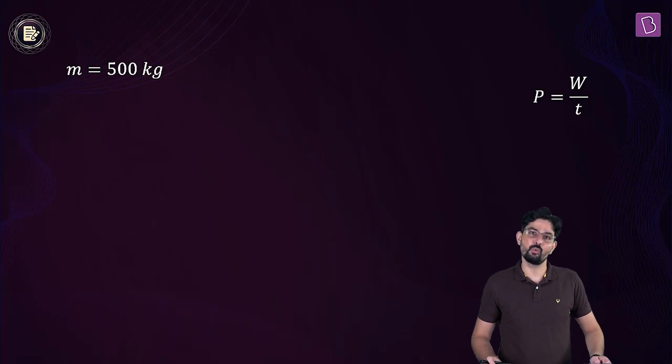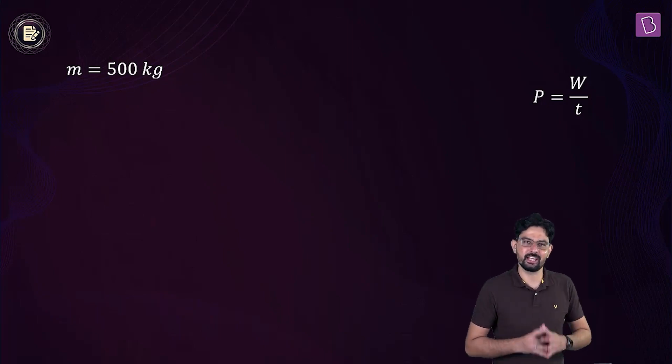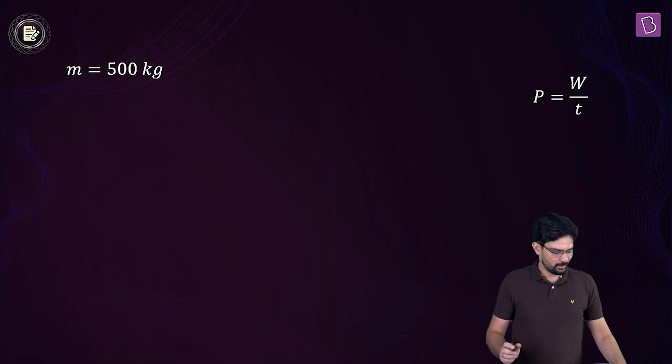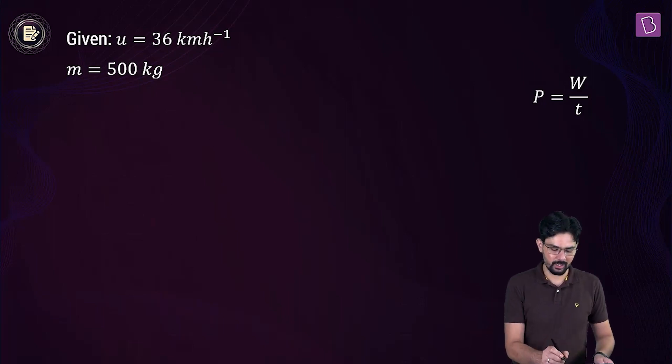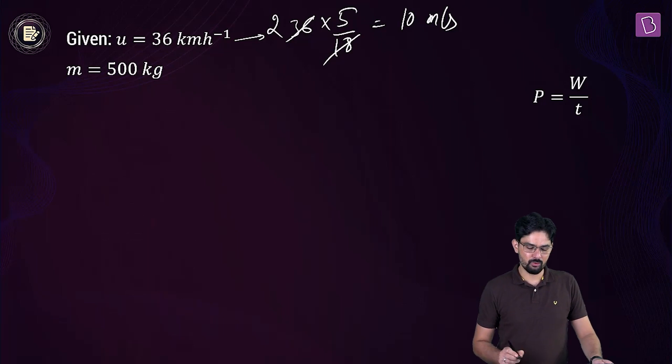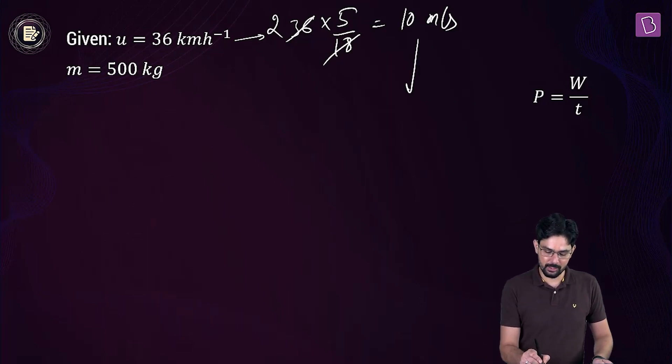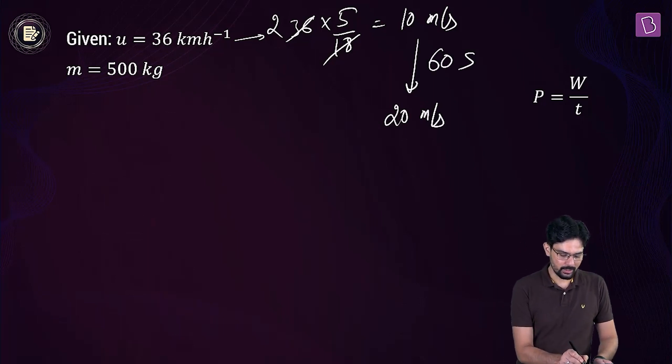And how will you do that? How will you find the value of w? Well, we can use the work energy theorem. Remember, the work done is going to be equal to the change in kinetic energy. So the initial velocity is 36 km per hour and let's convert it into meter per second because as you can see in the options, all the options are in watt. So we want it in SI units. To do that, we can multiply it with a conversion factor of 5 by 18. So this is nothing but 10 meter per second. So the car goes from moving with a speed of 10 meter per second to 20 meter per second in 60 seconds.